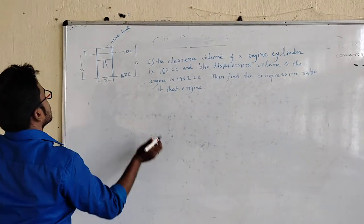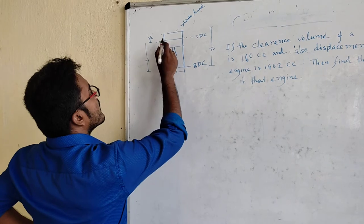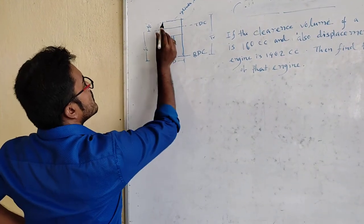We have to draw the cylinder. This is the space of the total volume.